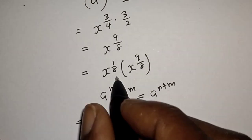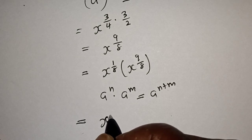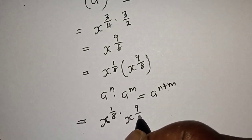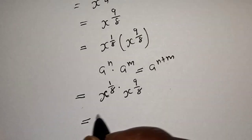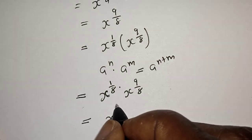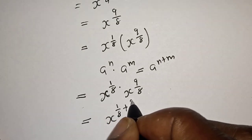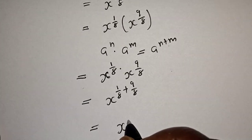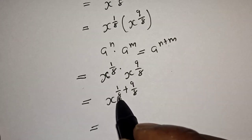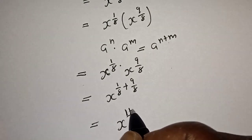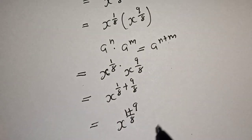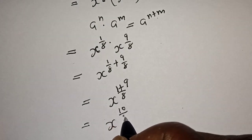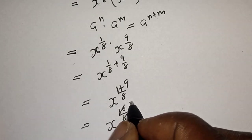The denominator is 8. We have 1 over 8 plus 9 over 8: the numerator is 1 plus 9, which equals 10. So this is equal to s raised to the power 10 over 8. Simplifying, 10 over 8 reduces to 5 over 4.